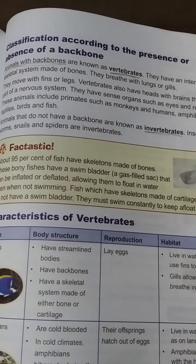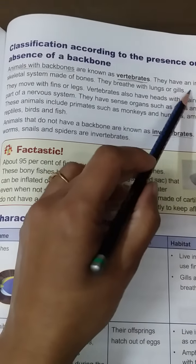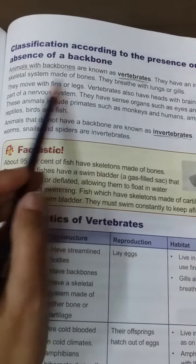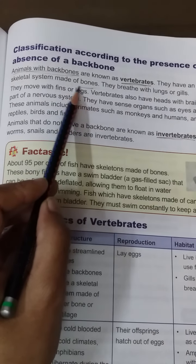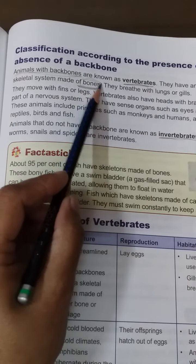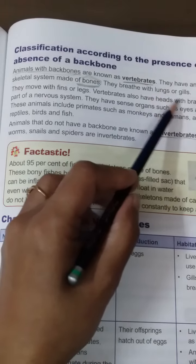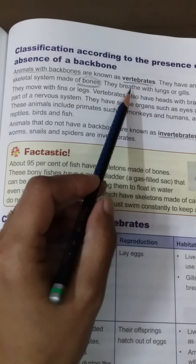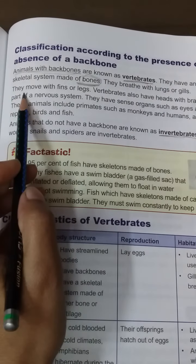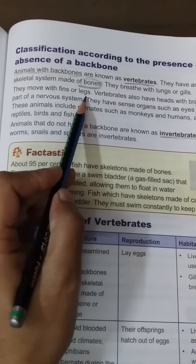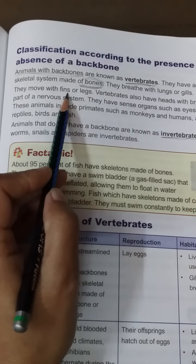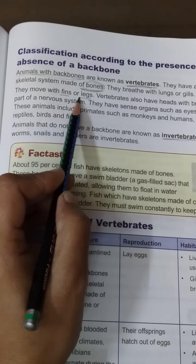We are vertebrates because we have backbones. Vertebrates have an internal skeletal system made of bones. They breathe with lungs and gills, and they move with fins or legs.